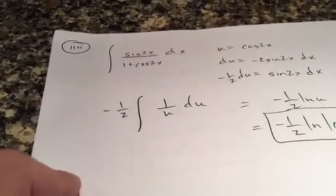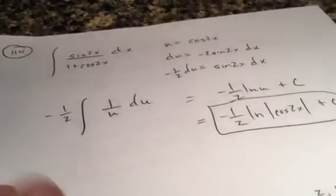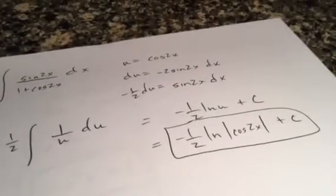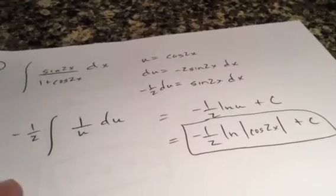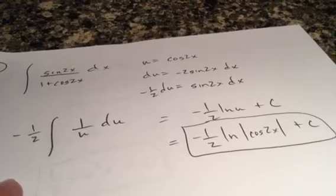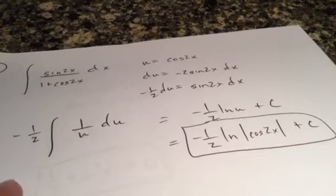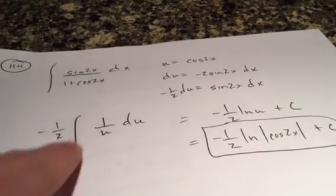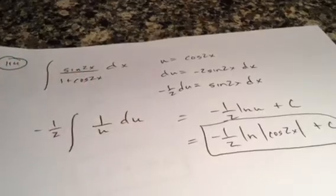And folks, we are back. Take the antiderivative, or evaluate the integral. So let's do some u-substitution. Let's let u be cosine 2x. So du is that. All right, so sine 2x dx, which you need to substitute something in for, is negative 1 half du.